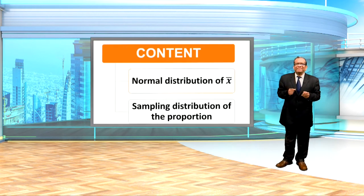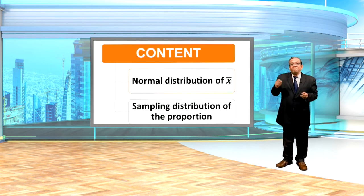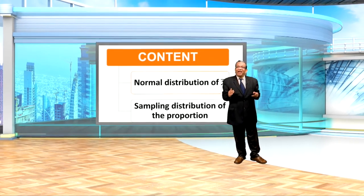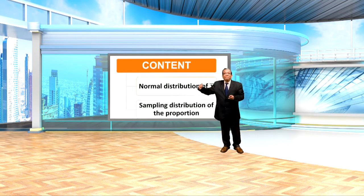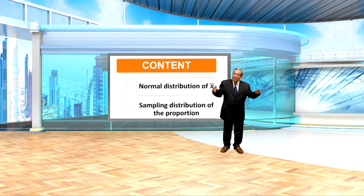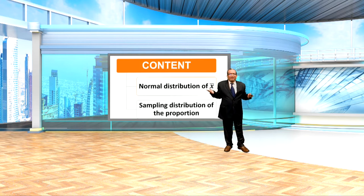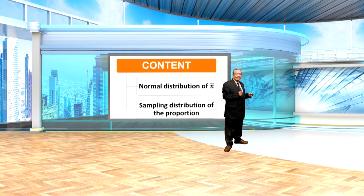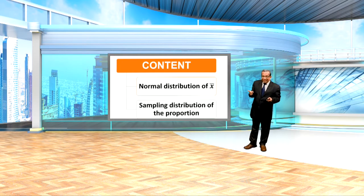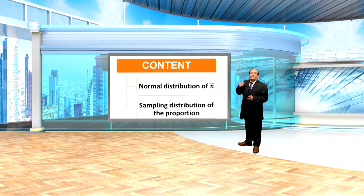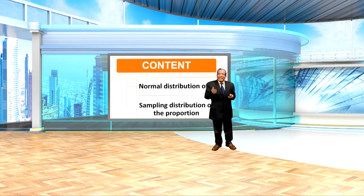First, what will be the distribution of the mean of the samples? You have already seen in the other video that the mean of the samples will always follow approximately a normal distribution if the sample size is large. This gives an important point: should we disregard the distribution of the population? To a certain extent, the answer is yes, because the population distribution can be anything. But if the sample size is large enough — how large enough we will see in the course of this lecture — it will approximately follow a normal distribution.